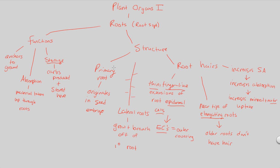That's a basic overview of the roots, which are found in the root systems. Keep in mind that roots have all three tissue systems: dermal, vascular, and ground tissue. We'll continue looking at the different types of root systems in the next video.